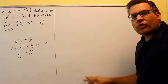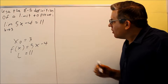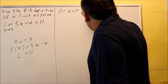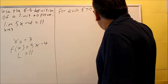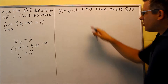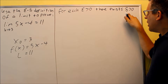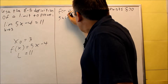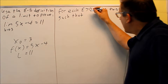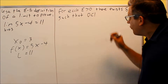In order to do the proof, we need to first use that first line from the first video. It says: for each epsilon greater than zero — meaning if there's an error in the y direction — there exists a delta greater than zero — meaning there's a corresponding error in the x direction. So for each epsilon, there exists a delta greater than zero, such that... and then you include the absolute value statement.